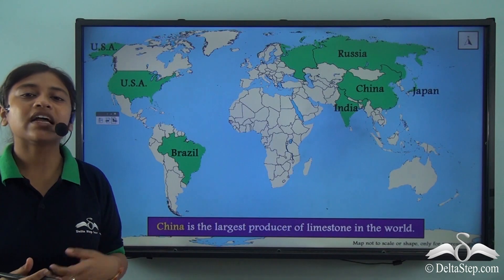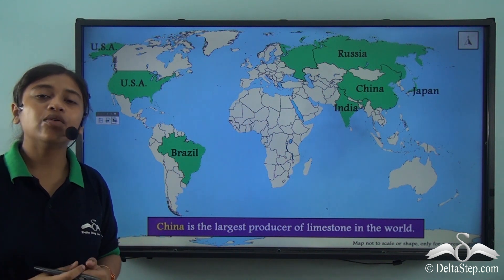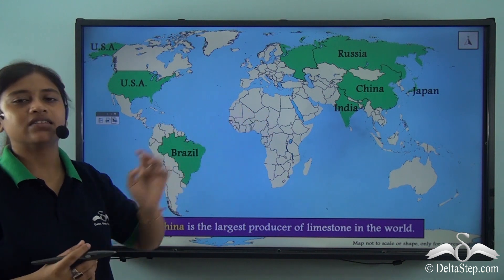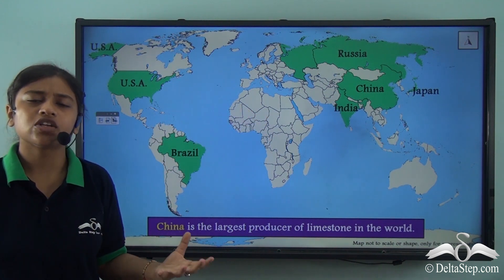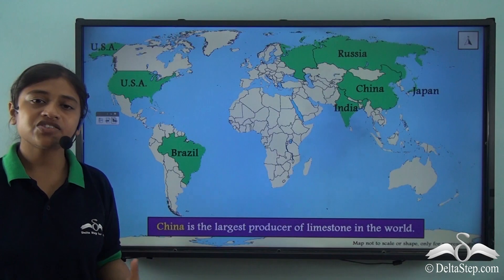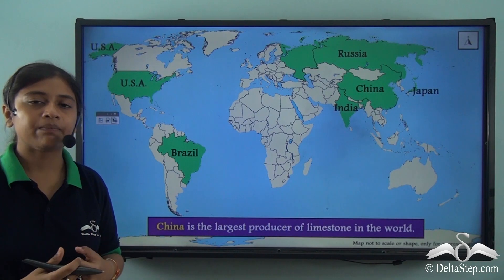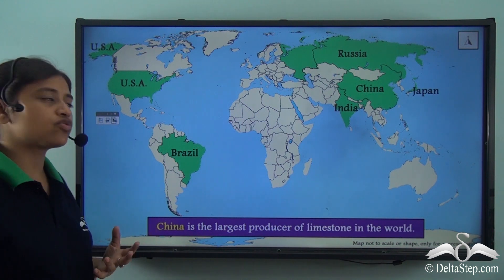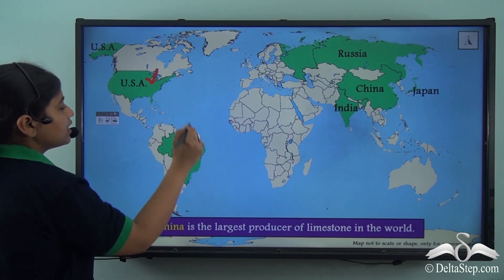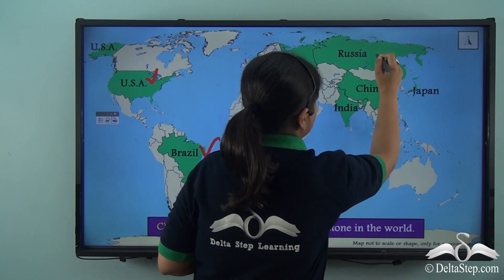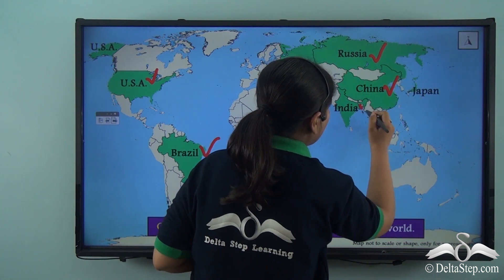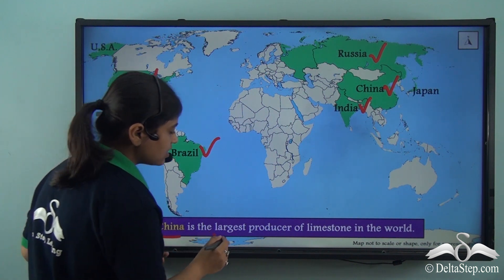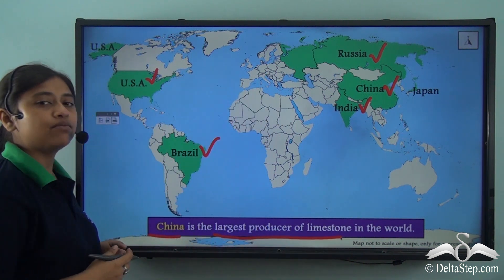Looking at the world map, there are various countries with huge deposits of limestone that are leading producers of this mineral. The countries doing well in the production of limestone are USA, Brazil, Russia, China and India. Out of all these countries, China is the largest producer of limestone in the world.